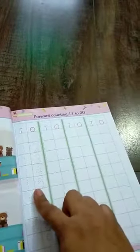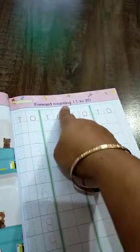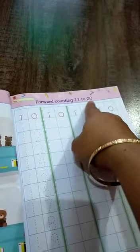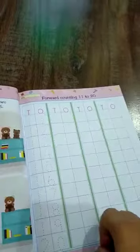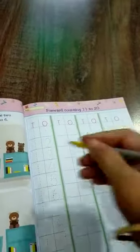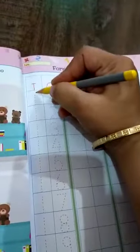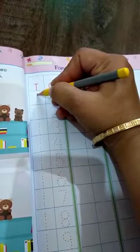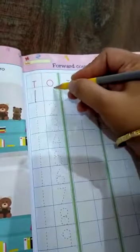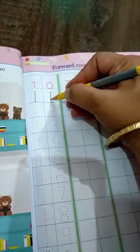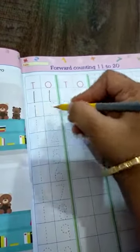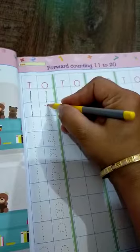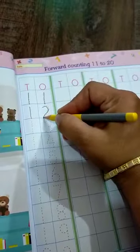What you have to do, in this page you have counting from 11 to 20. Firstly what you have to do, take your pencil, firstly trace these numbers. 1, 1, 11, 1, 2, 12.